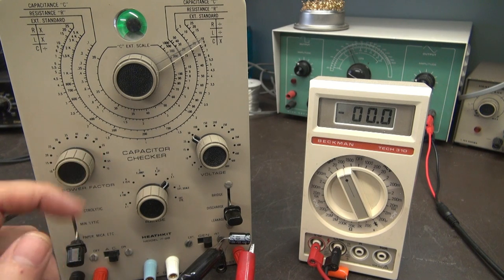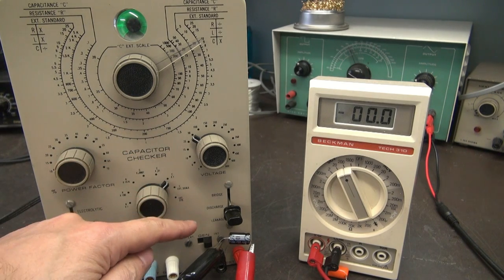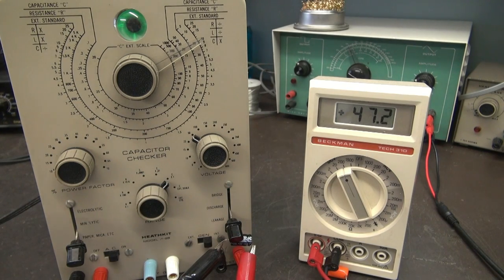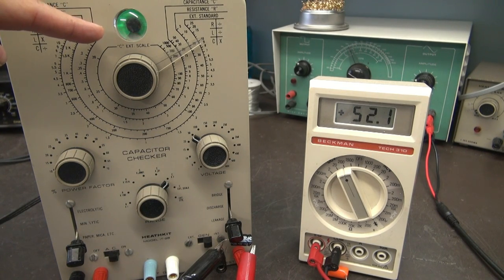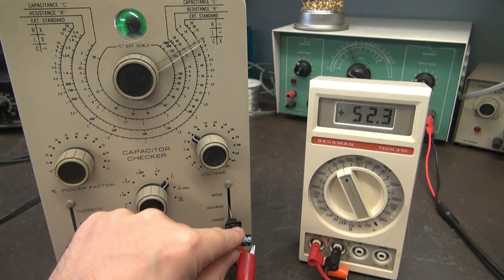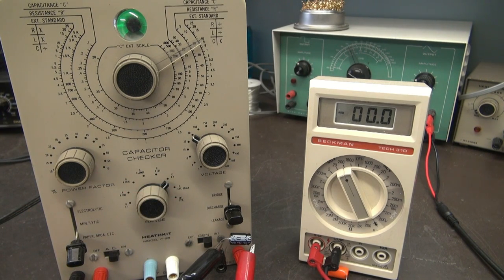One real nice feature of this capacitor checker versus other ones on the market is it can actually charge capacitors and then check them for leakage. This is really valuable when you're dealing with old power supply caps like on guitar amps. I've selected 50 volts and we're going to go to leakage. When I flip that switch you'll see 50 volts or so come up on my meter. Watch the magic eye, see how it opened there. It charged the cap and then it's telling you there's no leakage current through that capacitor. When you're done you put the switch to discharge, that kills the voltage so it's safe to remove the capacitor under test.